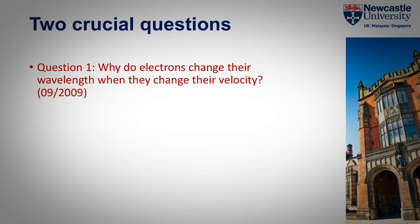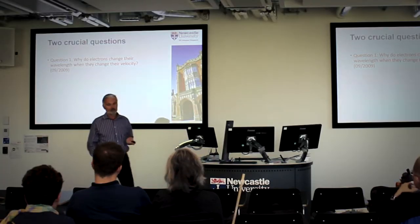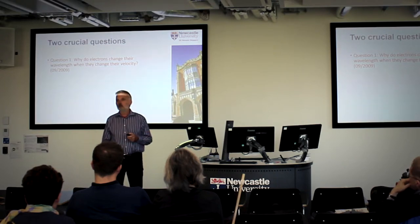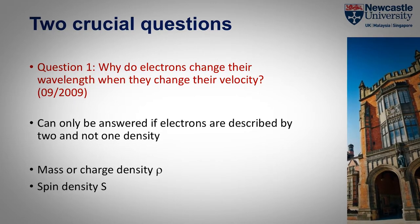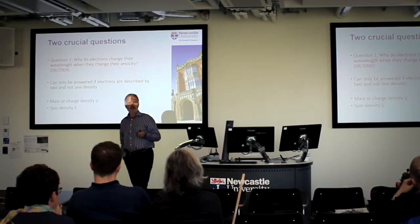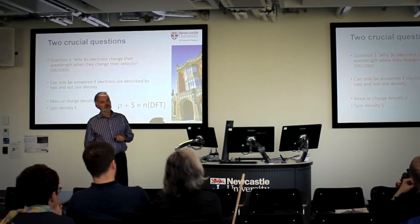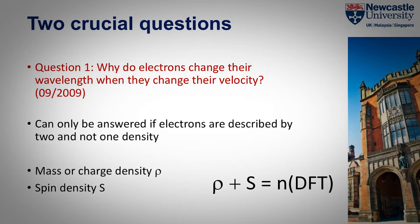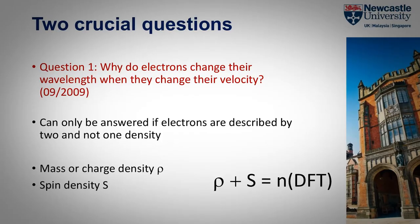The first question was: why do electrons change their wavelength when they change their velocity? This is something the standard theory can't answer. I asked this question in 2009 and found an answer on an airplane from Paris to Beijing. The answer is you have to have two densities: spin density and mass density. In the standard formulation, density functional theory operates with only one density, which is actually the sum of spin density and mass density.